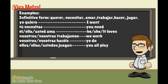So let's look at some of these subject pronouns in action. Here are some examples. Let's first look at the infinitive form of all the verbs we're going to use: 'querer' — to want; 'necesitar' — to need; 'amar' — to love; 'trabajar' — to work; 'hacer' — to do or to make; and 'jugar' — to play.